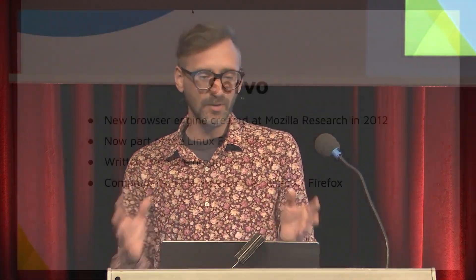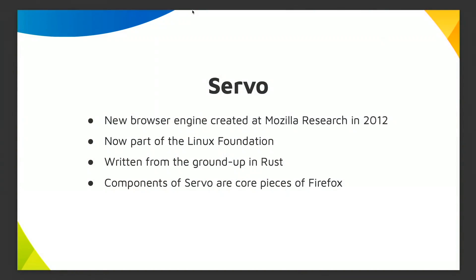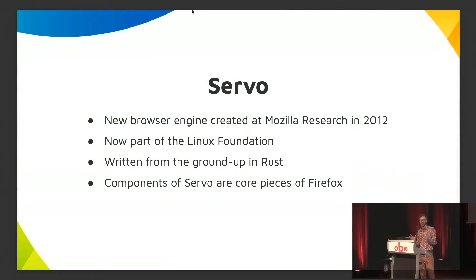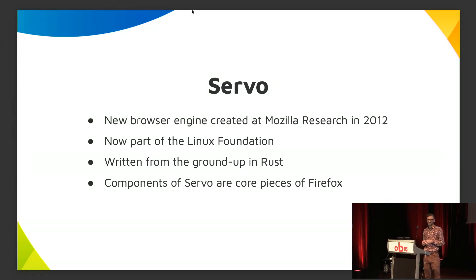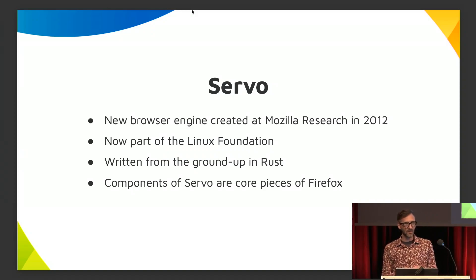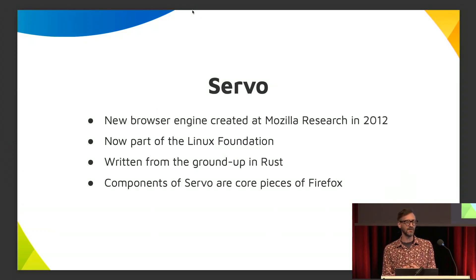Just a little bit of background about Servo. It's a web engine that was created at Mozilla Research in 2012. I believe it was announced in 2013. Nowadays it's part of the Linux Foundation, and this is a web engine that's written completely in Rust from the ground up. Some components are written in C, like the JavaScript engine, SpiderMonkey.